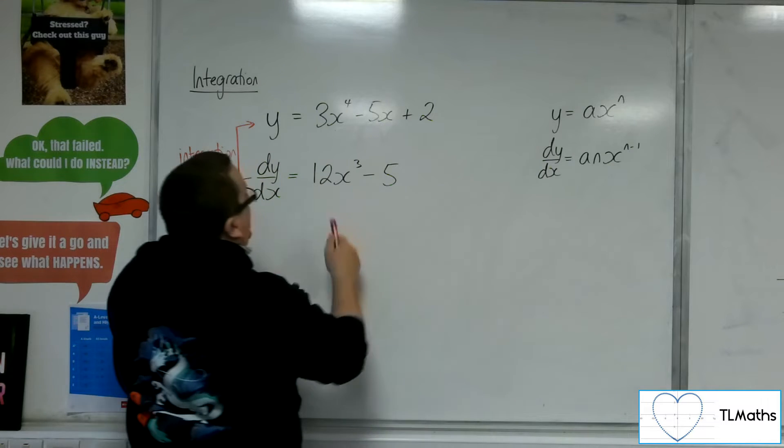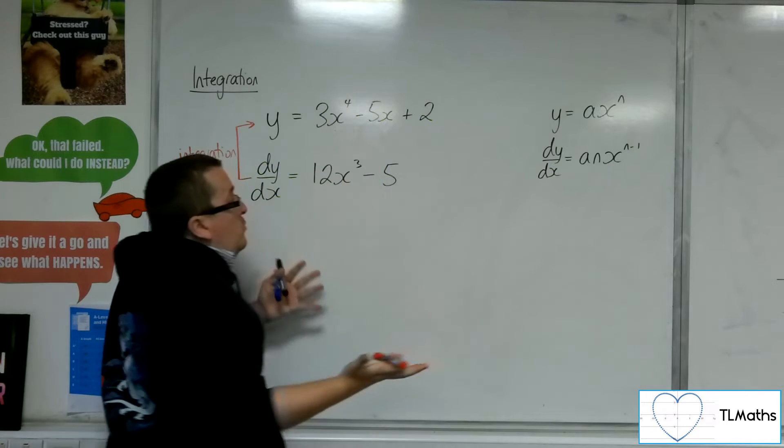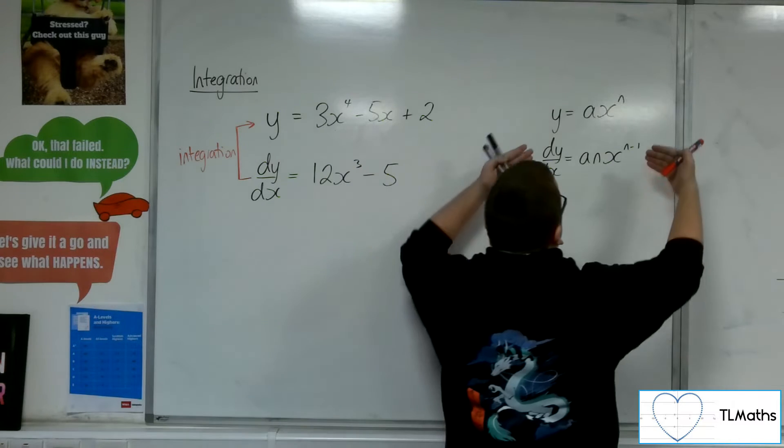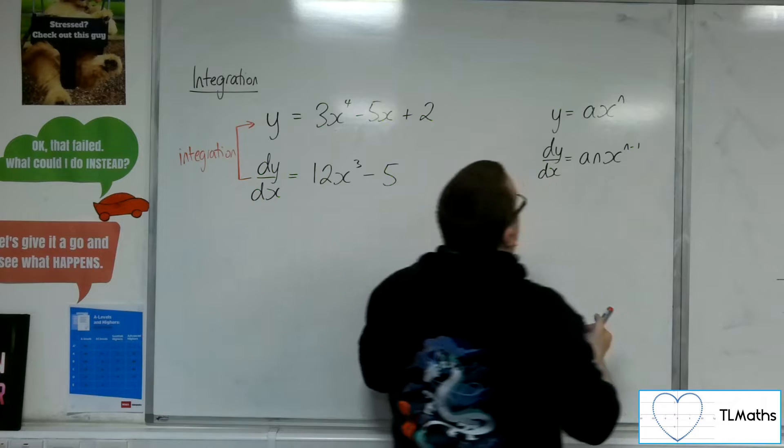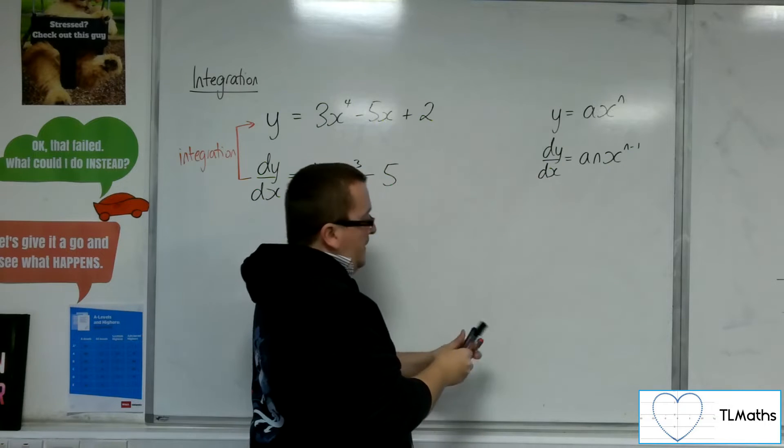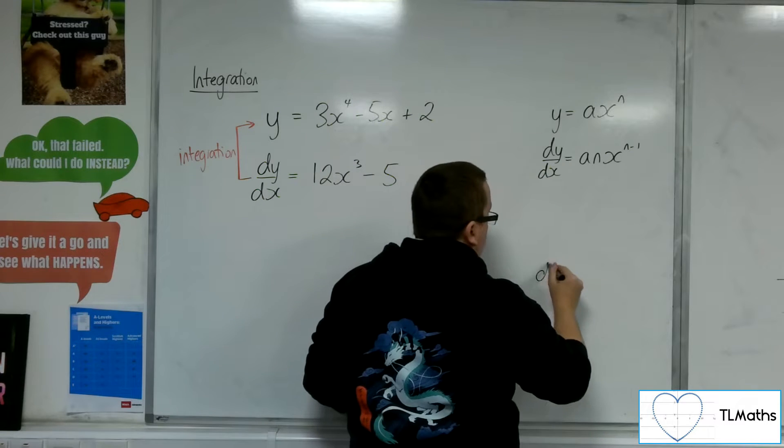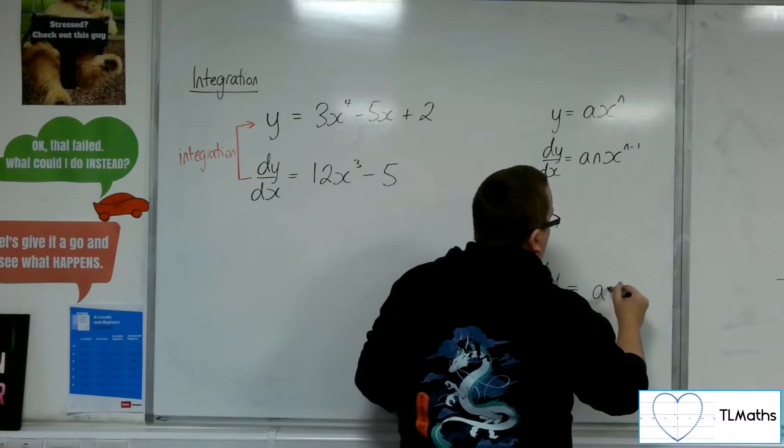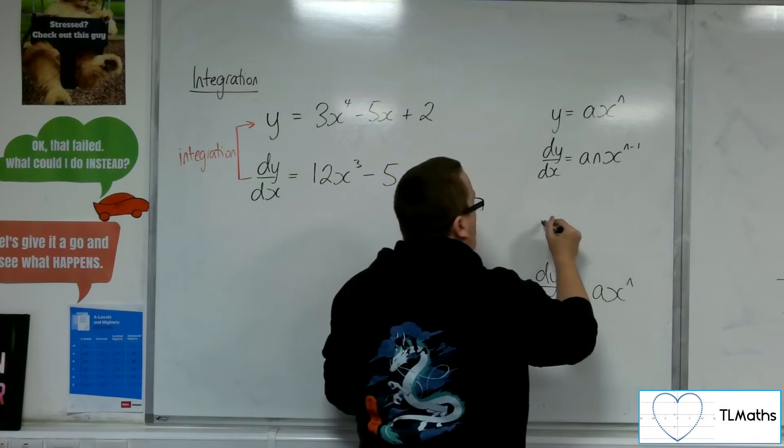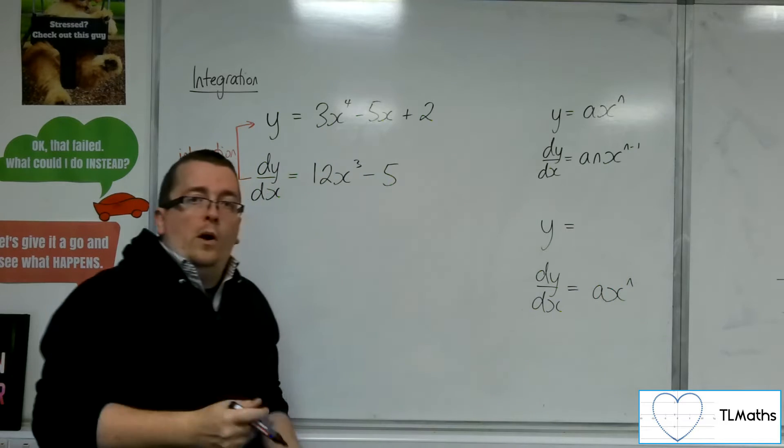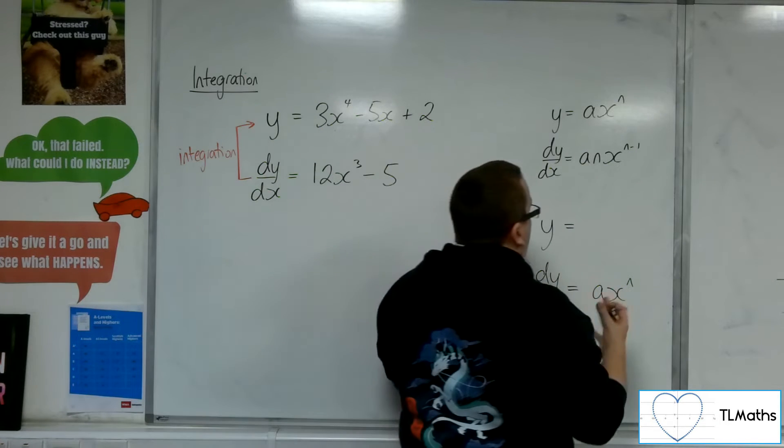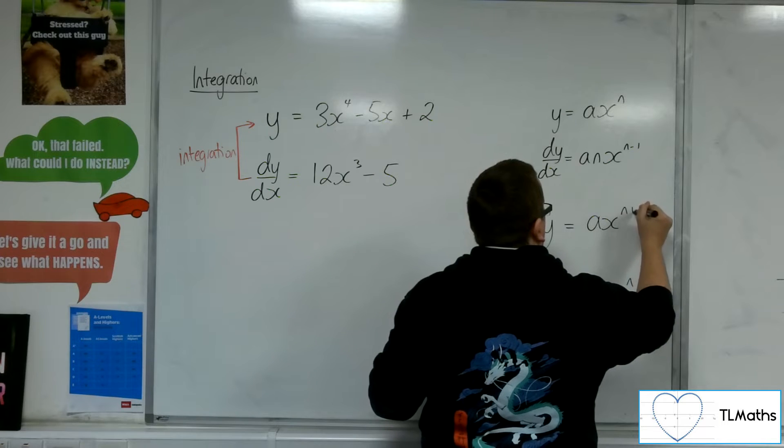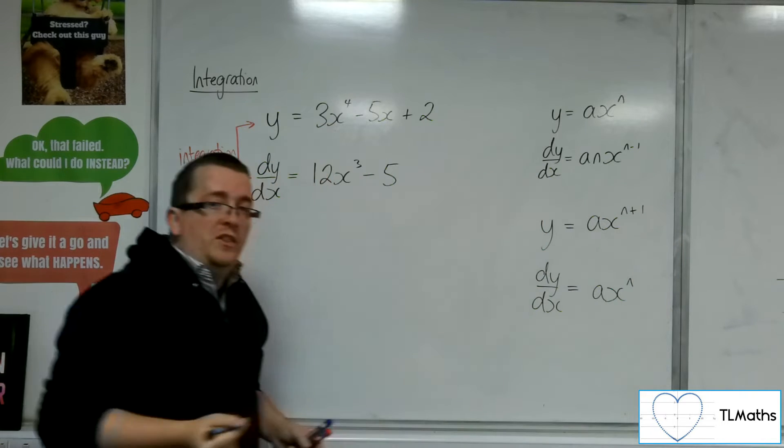Well, I can see that the power has got to increase. OK, the power has got to increase for me to get from dy by dx back to y. OK, so let's say I have my dy by dx and it's this time as ax to the n. How can I get to y? Well, the power's got to increase. We know that that's got to happen. So we can add 1 to the power.